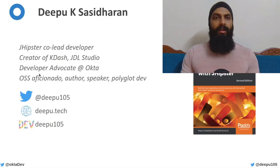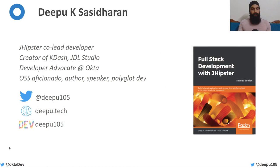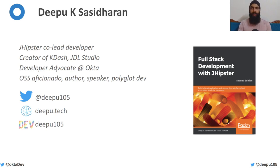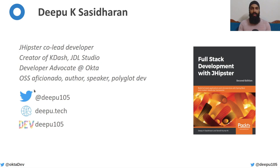My name is Deepu Keshashidran. I am the co-lead of JHipster. I also created a nifty dashboard called K-Dash for Kubernetes, JDL Studio for JHipster, and I work on a bunch of other open source projects. I am an open source aficionado and a polyglot developer. I work as a developer advocate at Okta with a focus on DevOps. I also publish frequently about languages and tech on my blog at deepu.tech.